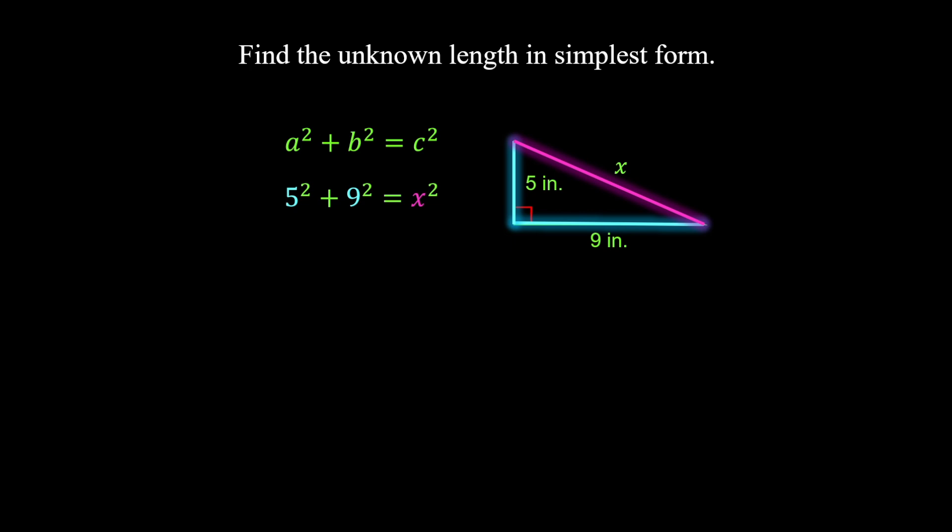Please note that a and b are interchangeable because they both represent legs. Let's solve for x by simplifying the expression on the left side. 5 squared is 25, plus 9 squared is 81, which equals x squared. Combine 25 and 81 to get 106. Finally, we take the square root of both sides to isolate x. Since there is no perfect square factor in 106, square root of 106 is in its simplest form.